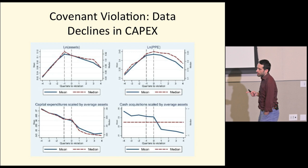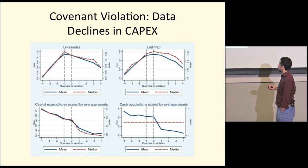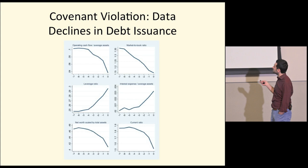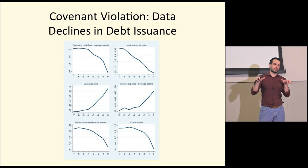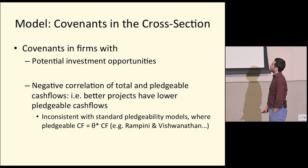Conditional on covenant violation — and this is for any covenants, not specifically negative pledge — on average covenant violations result in less capex, less M&A, and less debt issuance, rather than more. The problem is not with the model or the data in isolation, but with the link between them. The data the authors cite is not about the specific thing they're studying, yet they're citing it as support for other predictions of the model.